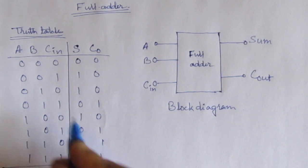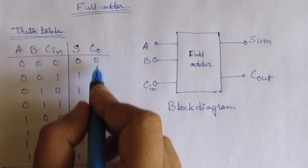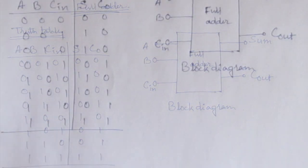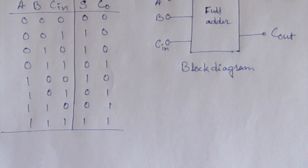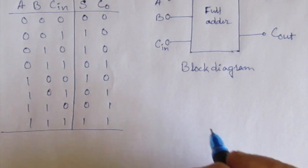So these are the sum outputs and these are the carry outputs. Now we will find the expression for sum and carry. For this we have to draw the K-map first.